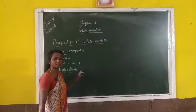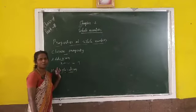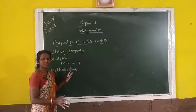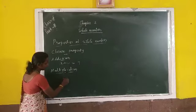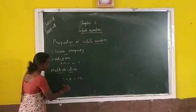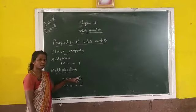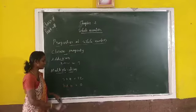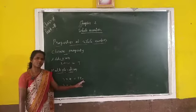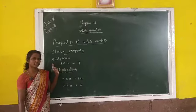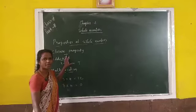Whole numbers are also closed under multiplication. When we multiply any two whole numbers, the answer is also a whole number. For example, 3 multiplied by 4 equals 12, and 8 multiplied by 0 equals 0. Here 3, 4, 8, and 0 are all whole numbers, and their products 12 and 0 are also whole numbers. So whole number multiplied by whole number is a whole number.